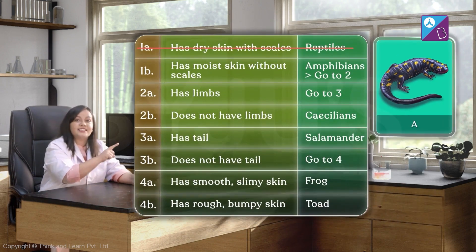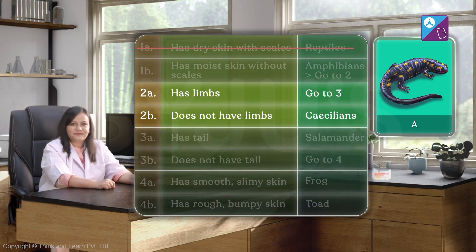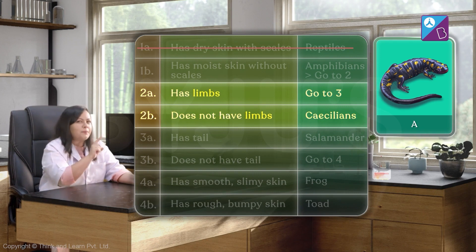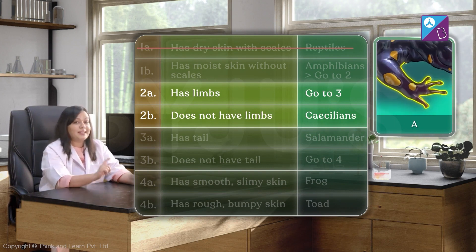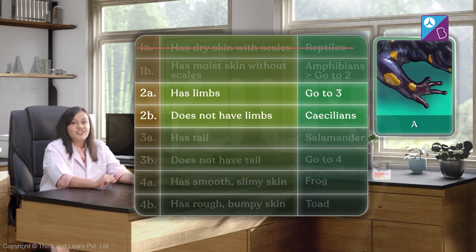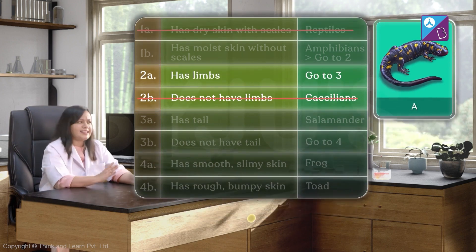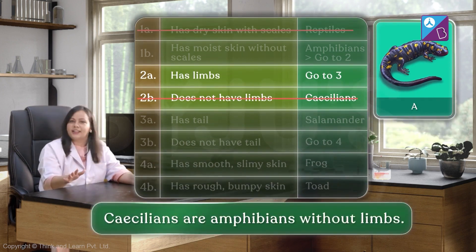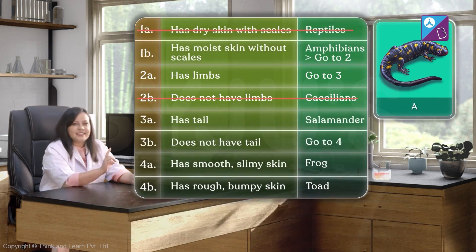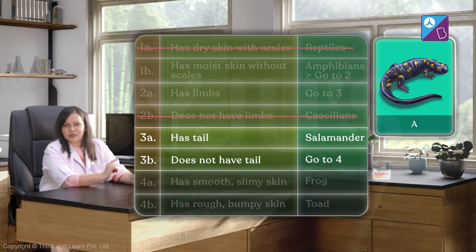The key directs us to go to statement 2. The second set of statements talk about limbs. I do see limbs on specimen A, so clearly it is not a caecilian. Caecilians are basically amphibians that do not have limbs. I think we can proceed to the third set of statements.